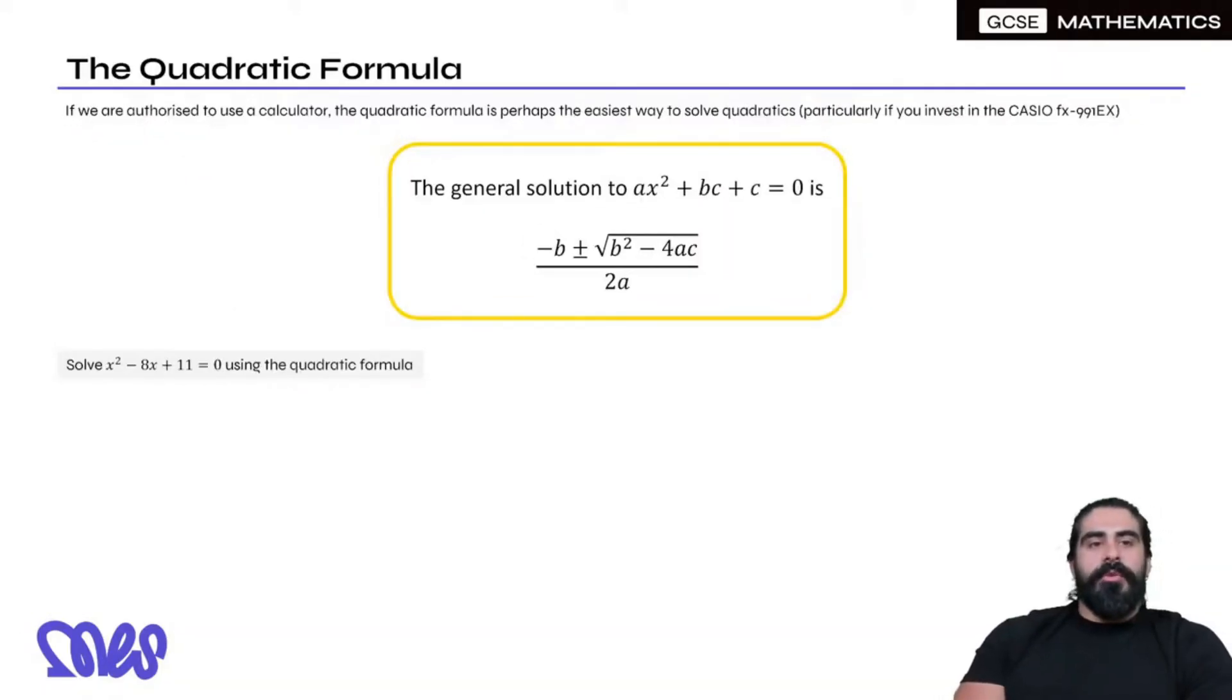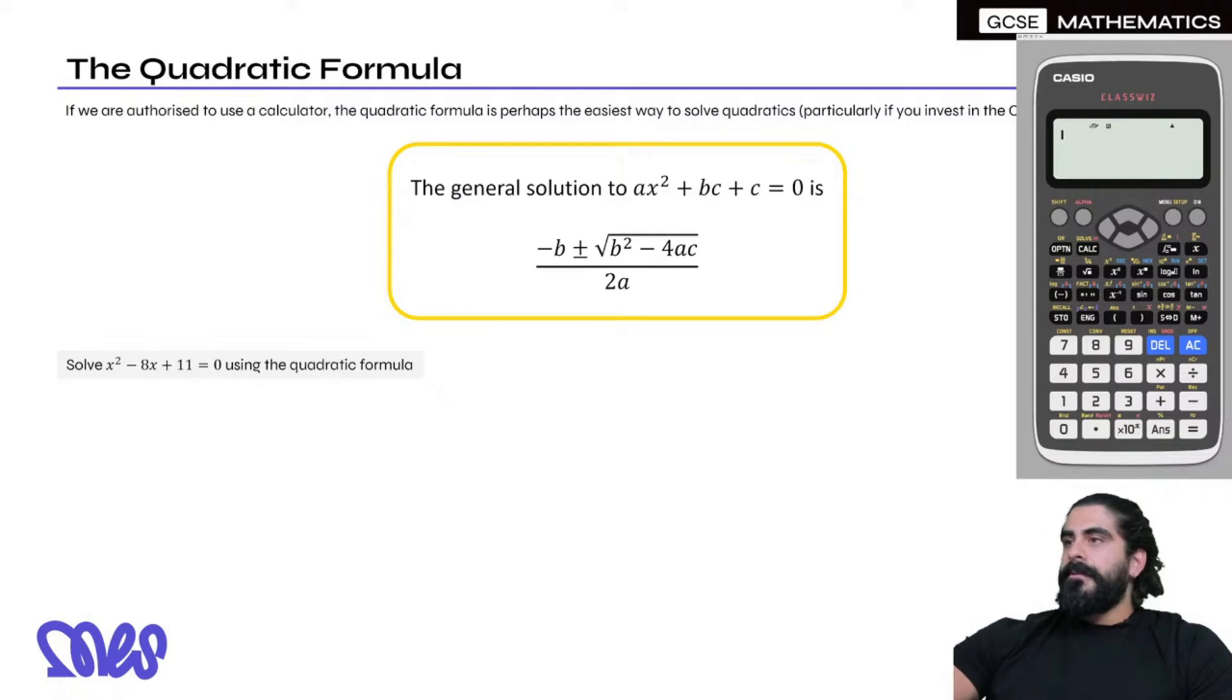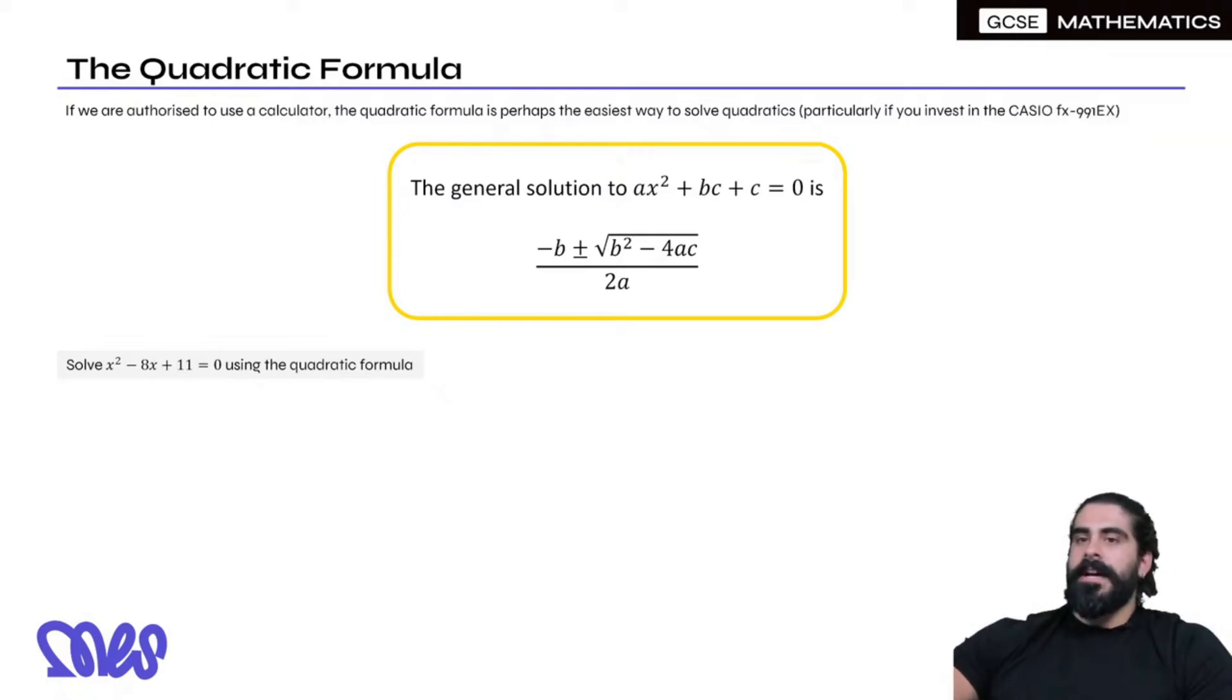If we are authorized to use a calculator, the quadratic formula is perhaps the easiest way to solve quadratics, particularly if you invest in the Casio FX991EX. You guys see me use a calculator, this one. The model for this is the Casio FX991EX.